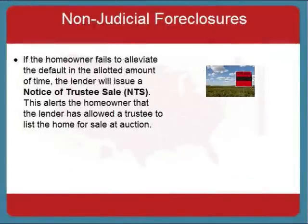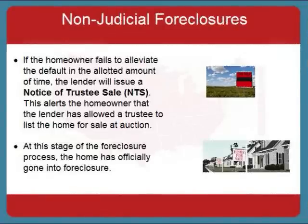If the homeowner fails to alleviate the defaulted deed of trust or sell the home as a short sale, the lender will issue a notice of trustee sale. At this stage, the home has officially gone into foreclosure. This notice lets the homeowner know that a trustee has been given permission to list the home for sale at auction. Although it is still possible for a homeowner to reinstate the defaulted loan as much as five days prior to the auction sale date, the home is now in foreclosure. In both judicial and non-judicial foreclosures, the homes will be listed for sale at auction.